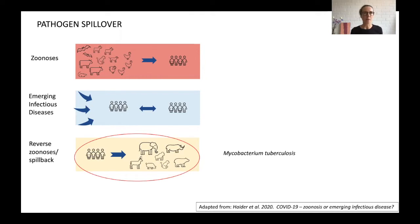Mycobacterium tuberculosis has been shown to be capable of causing disease in a number of animal species. These are often sporadic or incidental occurrences in captive wildlife where individual animals have been put in contact with infected humans. Probably the most well-known example is elephants, where human origin TB has become increasingly prevalent in the past couple of decades, and more recently and concerningly, it has been detected in free-ranging individuals.